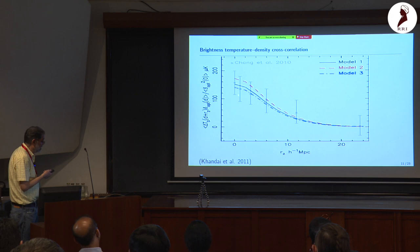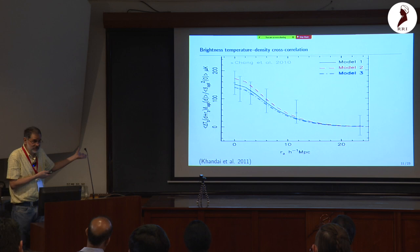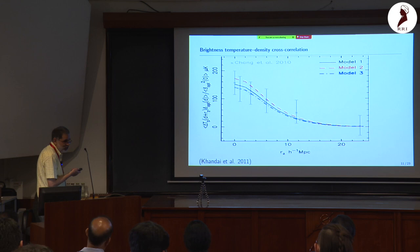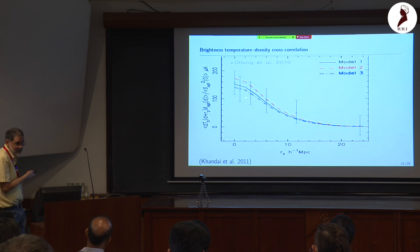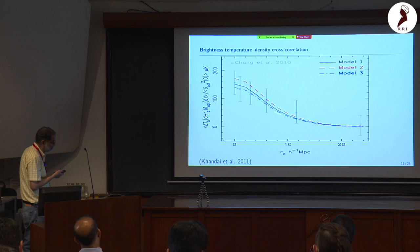This cross-correlation was done along the line of sight, and our N-body simulation aimed to reproduce it. All three models we tried were within the error bars — partly because the error bars are large — but the simulation does capture the clustering of halos and subhalos pretty well in modeling this result.